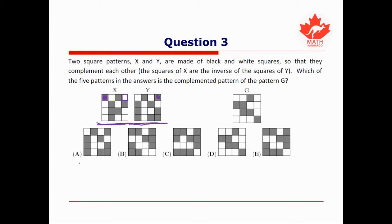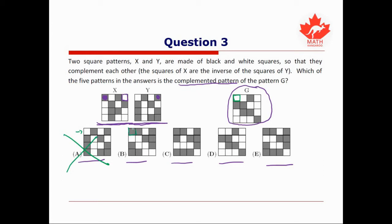The question says: which of these five squares below — A, B, C, D, and E — is the complemented pattern of pattern G? That means we're looking for the square that has all the opposite colors of G. If I look at the top left square of G, that is not filled in, so I want to look at all the shapes that have the top left corner filled in. A's top left corner is not filled in, so we don't want that one. B's top left corner is filled in — it might be our answer. C's top left corner is also filled in, so our answer could be B or C. D's top left corner is not filled in, and E's top left corner is also filled in.